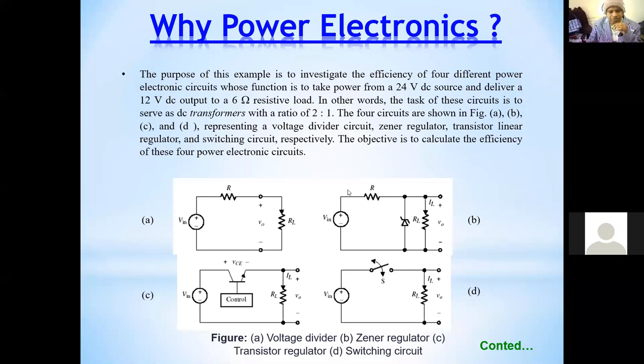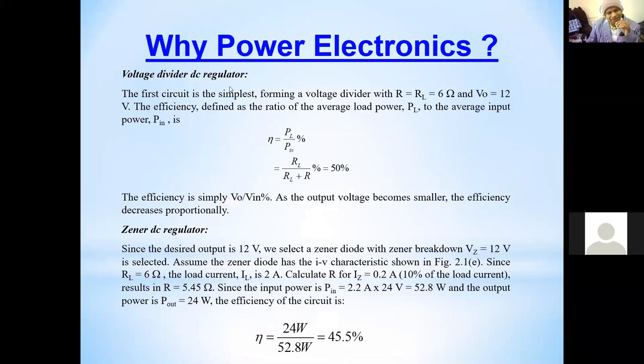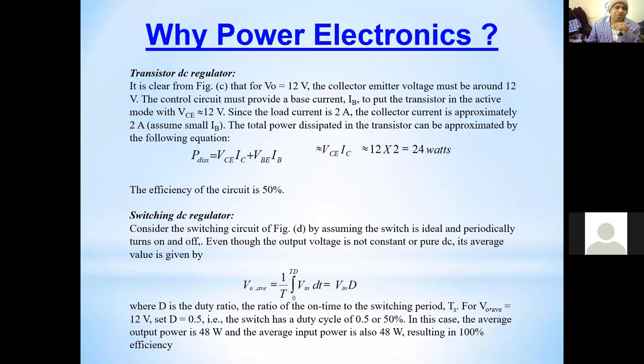When you calculate this voltage divider, the first one gives 50% efficiency. The Zener diode regulator gives around 45.5% efficiency if you calculate. Similarly, the transistor regulator is also around 50%. Whereas if your switching loss is nearly zero with an ideal switching, you have nearly 100% efficiency.